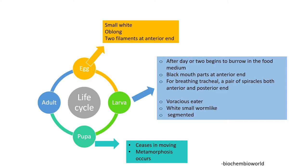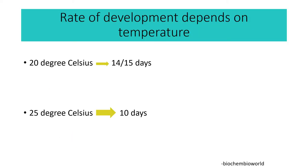The life cycle of Drosophila melanogaster — the number of days it takes to turn into an adult — depends upon the temperature. If the temperature is 20 degrees Celsius, the life cycle is about 14 to 15 days. And if the temperature is 25 degrees Celsius, the life cycle is 10 days.